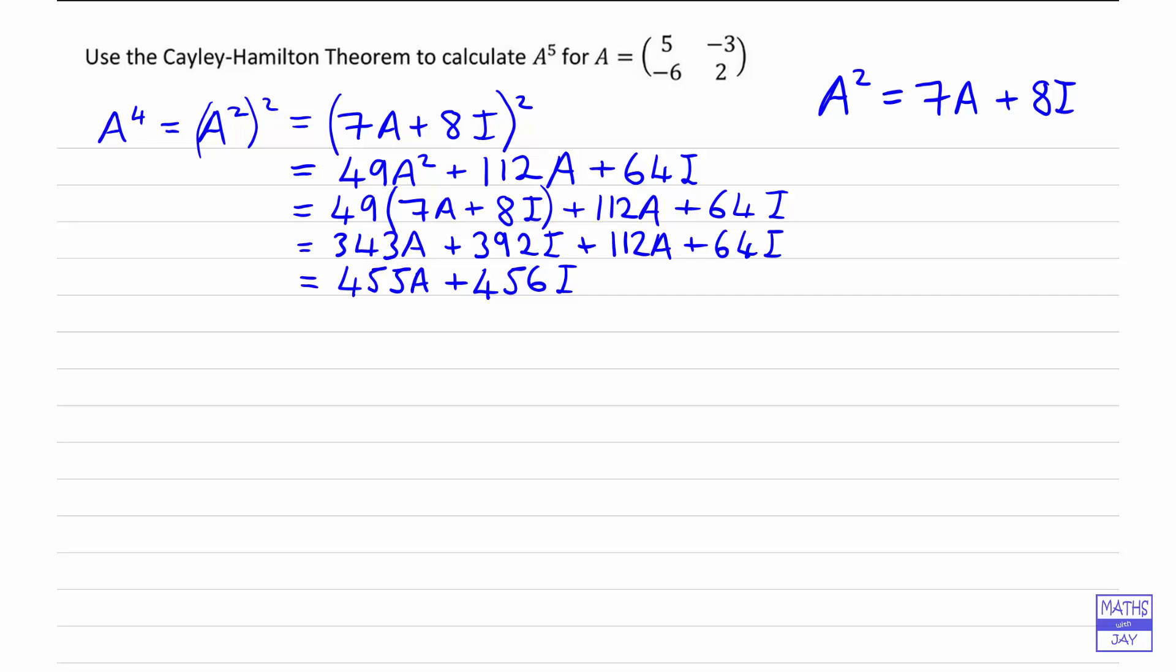And now we want to find, for our final answer, we're trying to find A⁵, and that's equal to A times A⁴. So using our previous answer, multiplying by A, we've got 455A² and 456A. And again, we've got an A², so we replace that by 7A + 8I.